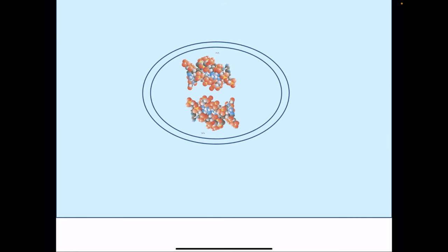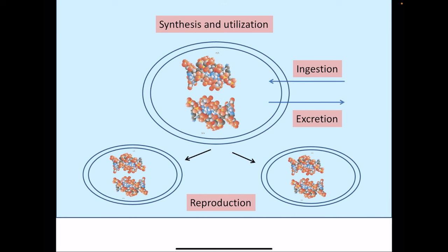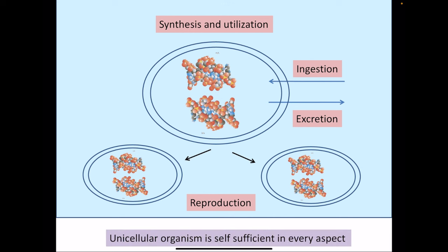A unicellular organism has a lot of needs. It has to ingest nutrients from the environment, take up oxygen so that metabolism can take place, and there would be production of waste products which need to be excreted. It has to synthesize stuff to maintain living processes, utilize resources from the environment, excrete waste products, and reproduce. A unicellular organism is basically self-sufficient in every aspect.